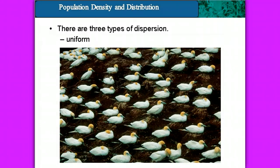Here's another example. This one is uniform. All of the birds are nesting, but they're nesting equal distances apart from each other, so that way they have enough space.